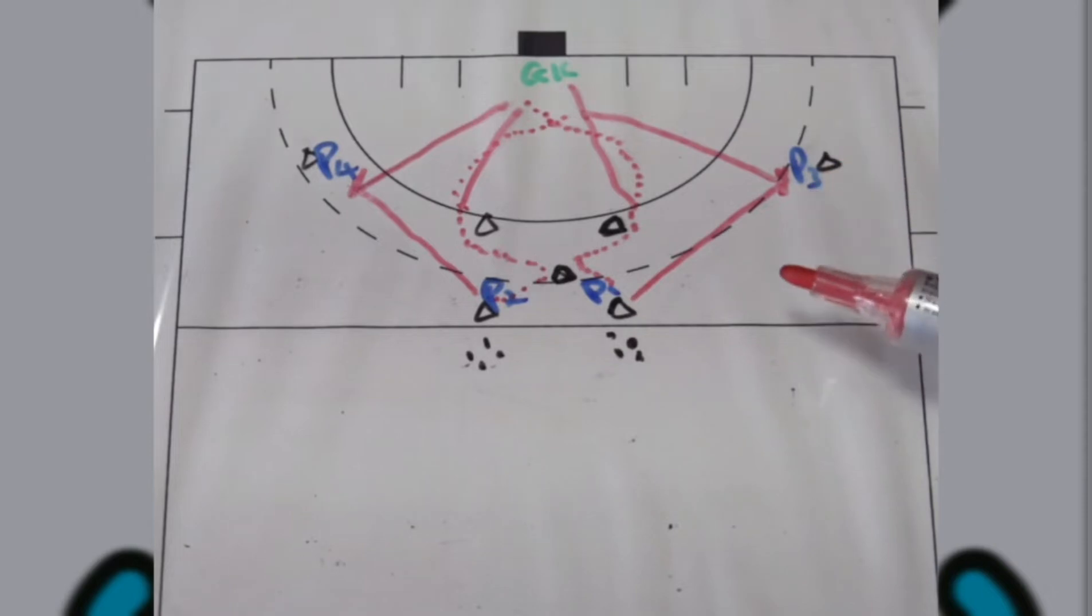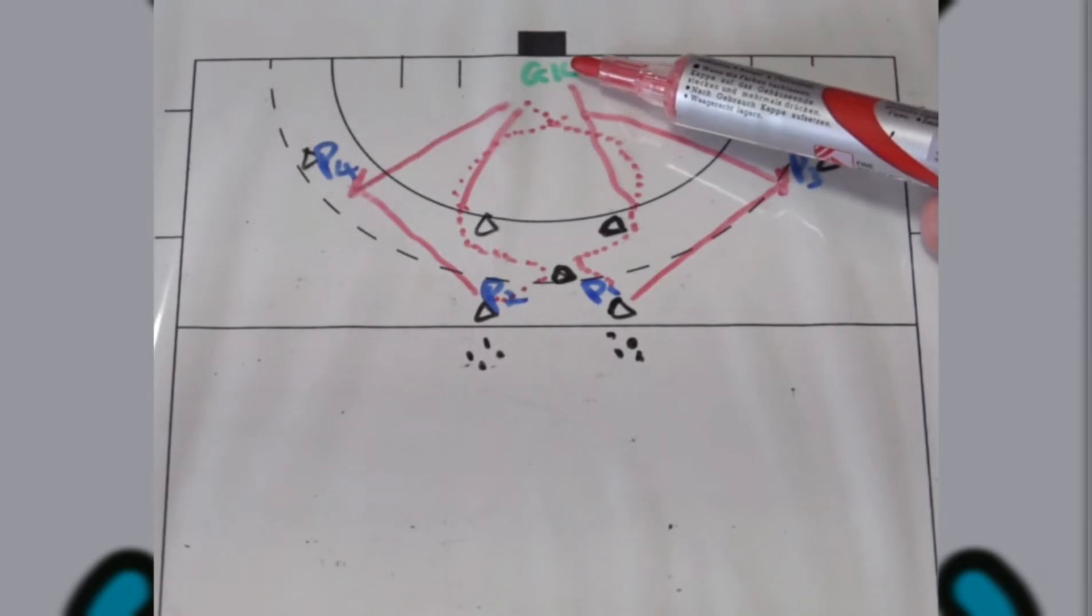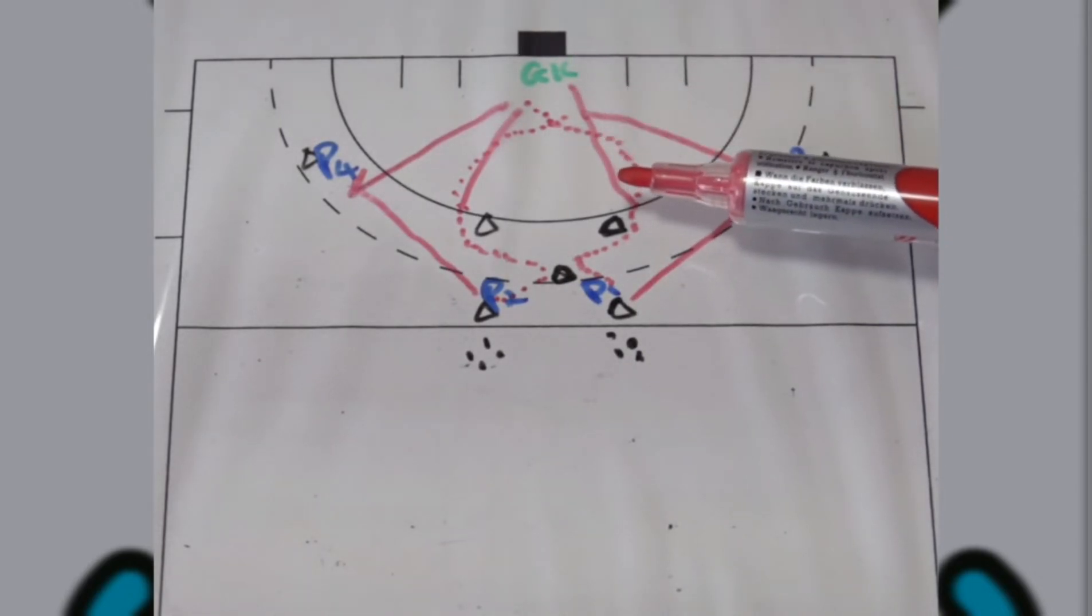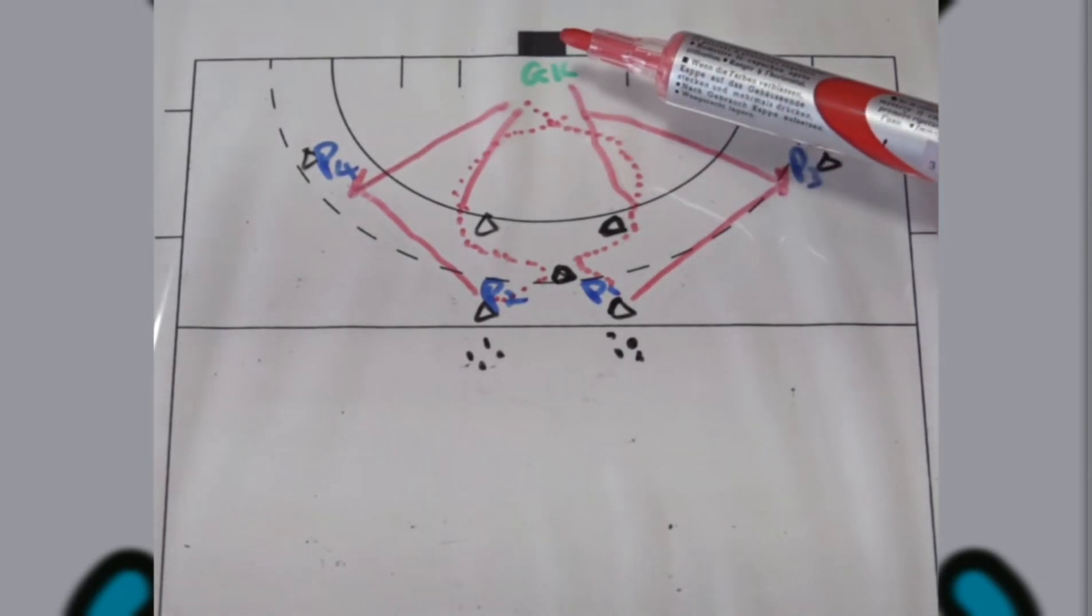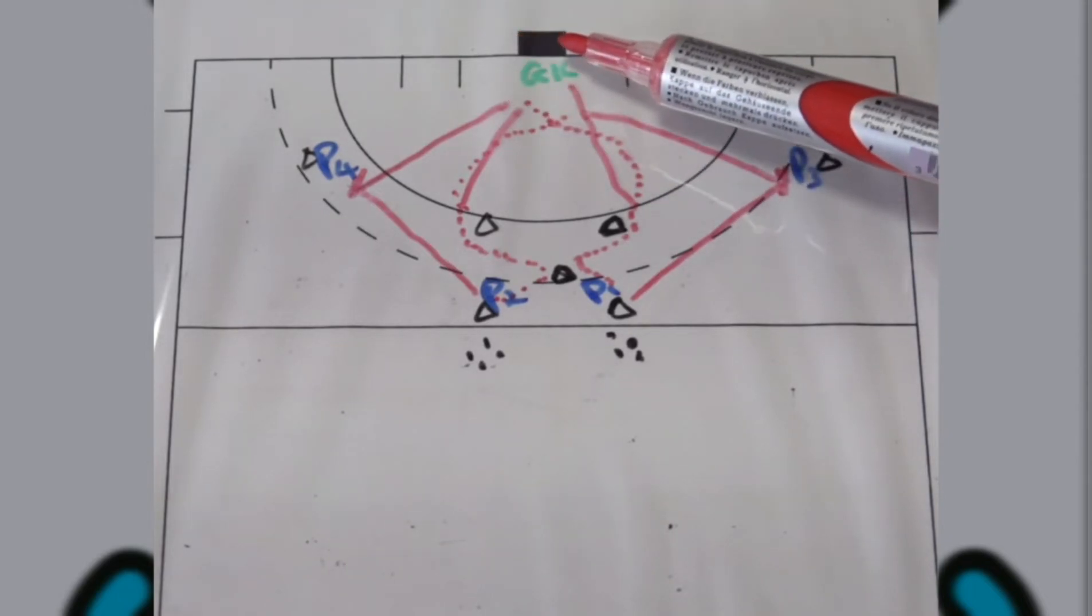So as you can see with this drill, there's a lot of stuff that your players are working on. For the start, the keeper works on stopping the first shot and then also having to work on reflex saves with the deflection.